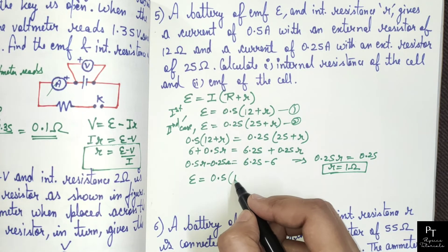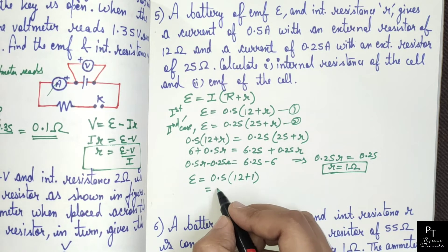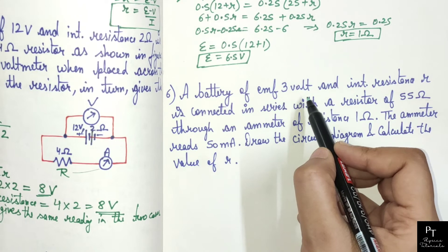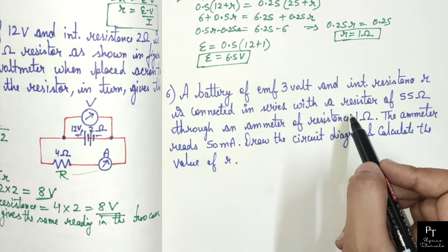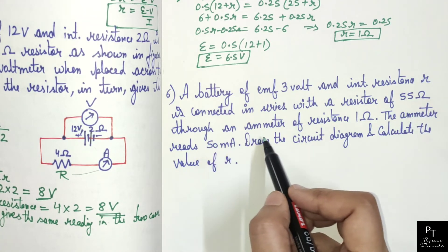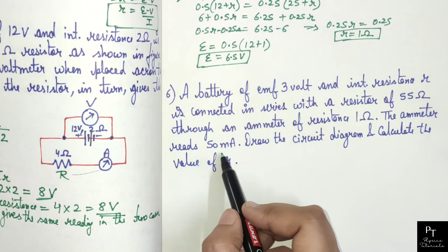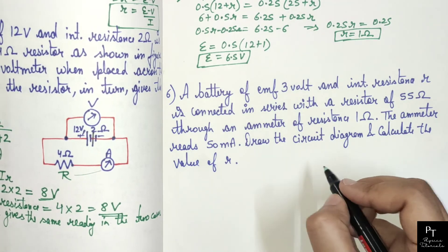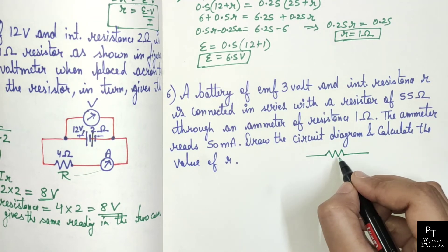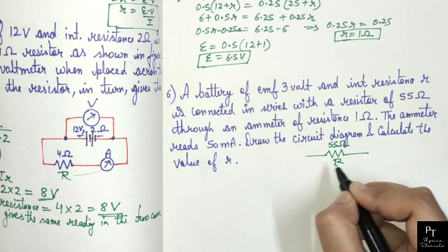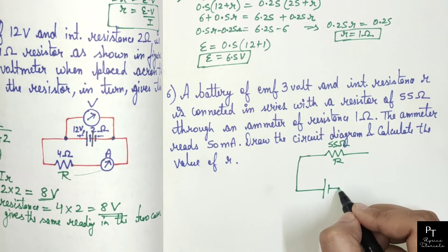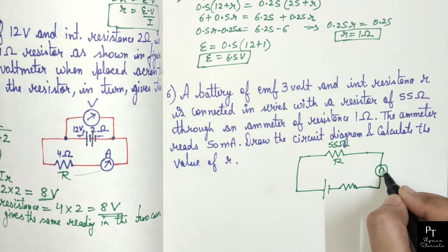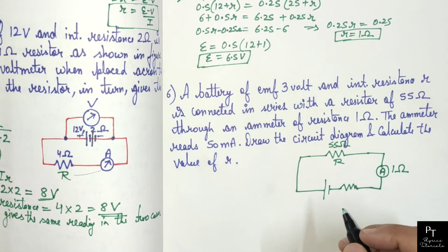The next problem: a battery of EMF 3 volt and internal resistance r is connected in series with a resistor of 55 ohm through an ammeter of resistance 1 ohm. The ammeter reads 50 mA. Draw the circuit diagram and calculate the value of r. First we draw the circuit diagram: we have a resistor of resistance 55 ohm, an ammeter of resistance 1 ohm, and a battery of EMF 3 volts and internal resistance r.